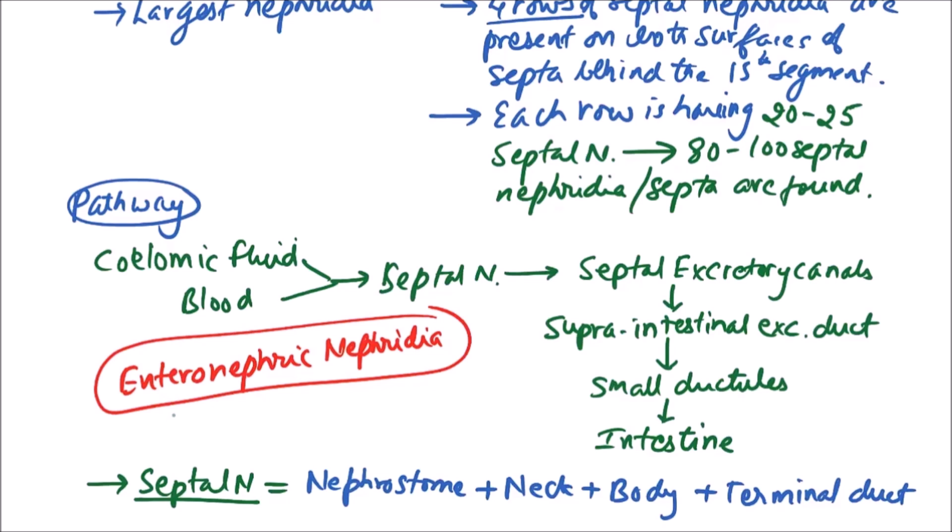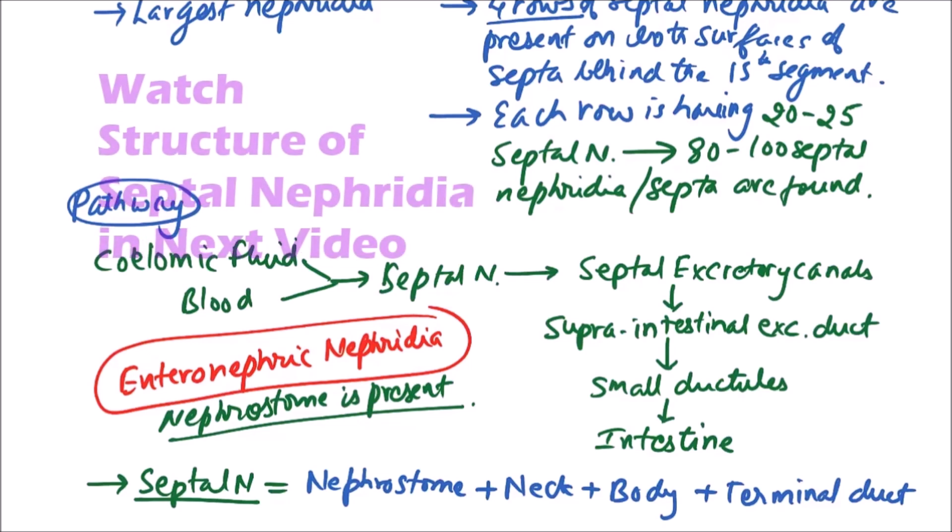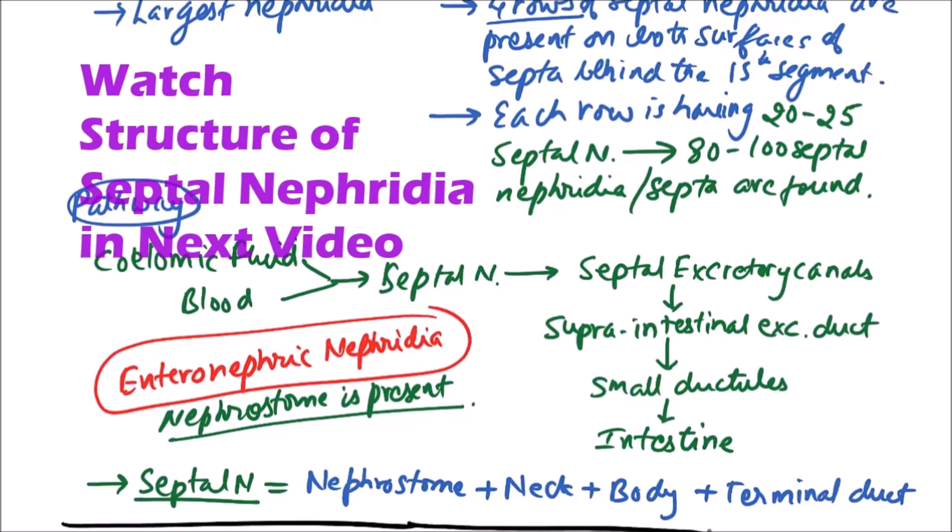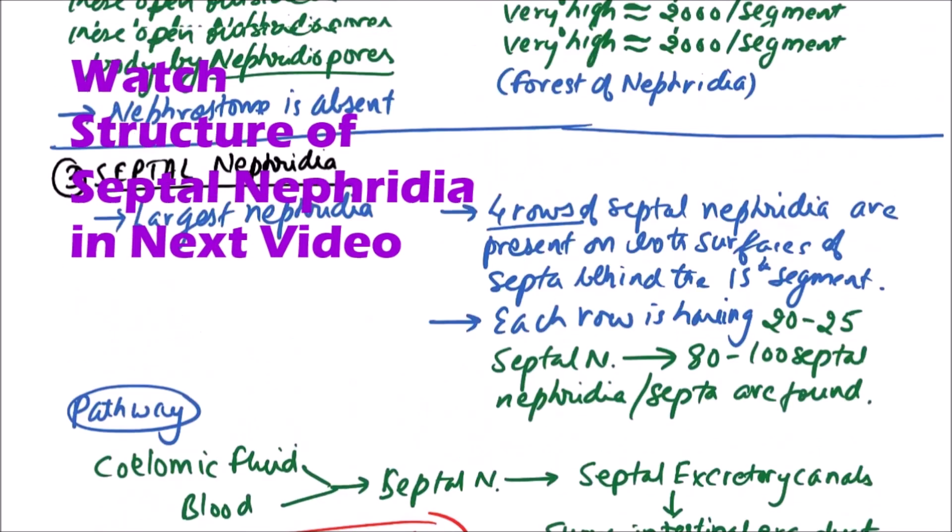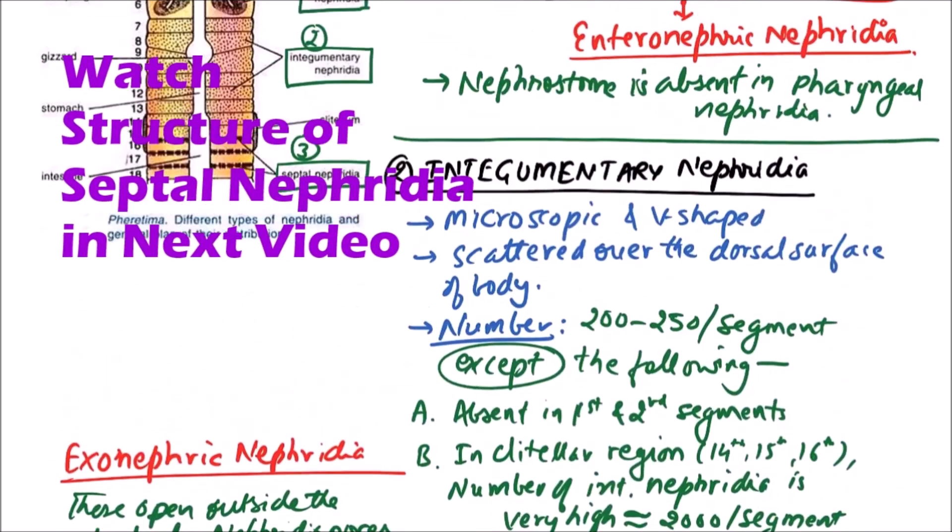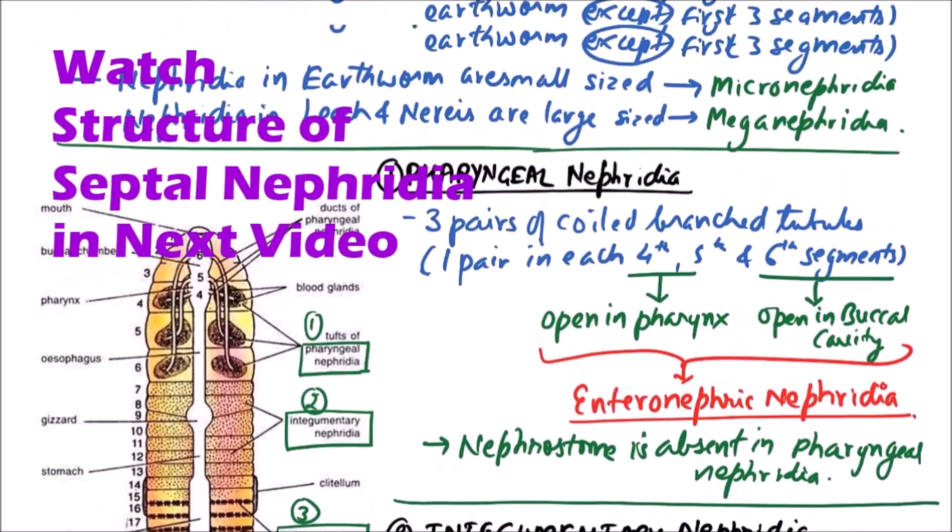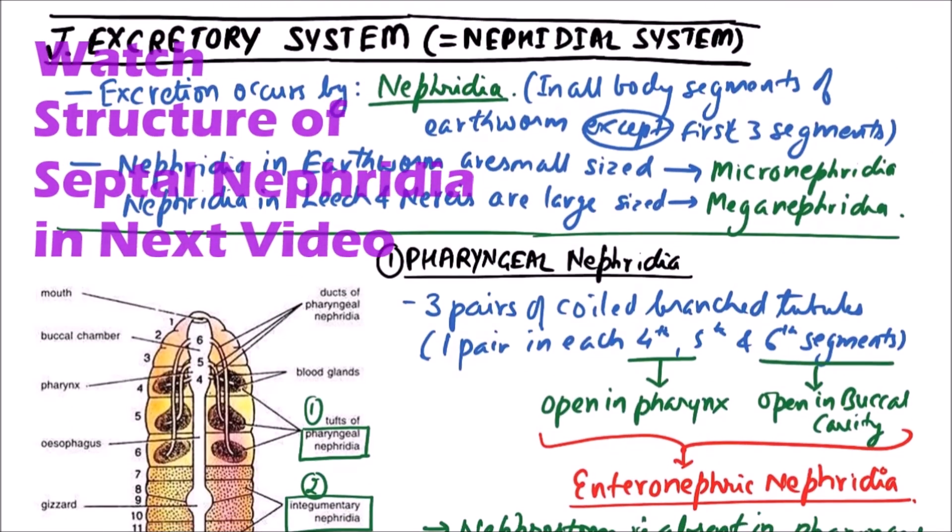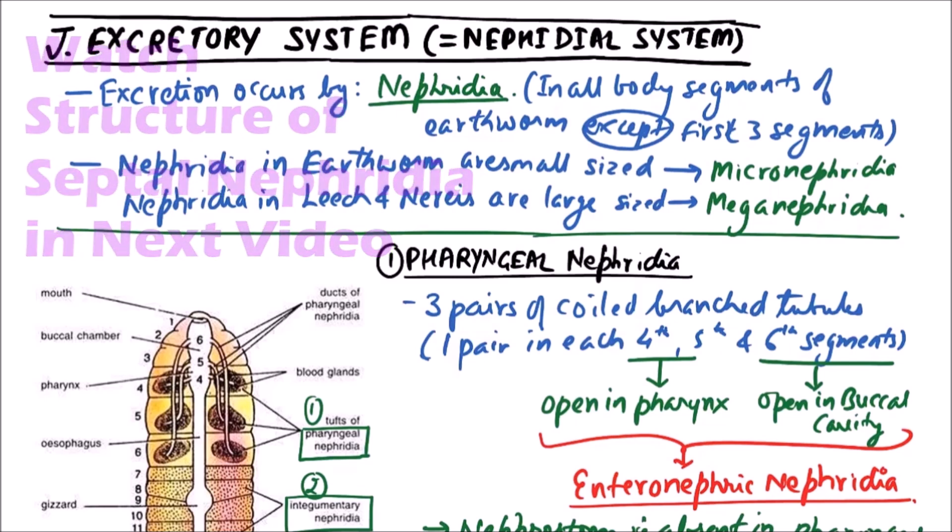And nephrostome is present in them. So these are the three types of nephridia in earthworm and the nephridial system. In next lecture we will discuss the structure of septal nephridia. Thanks for this video.